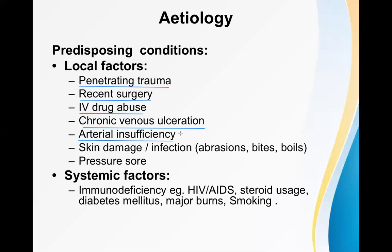Arterial insufficiency — where blood flow in an artery is not proper — is another local factor. Examples include thrombosis, embolism, atherosclerosis, Buerger's disease (thromboangitis obliterans), Raynaud's phenomenon, and even diabetes secondarily through atherosclerosis. When arterial insufficiency occurs the supplied area becomes ischemic, and that ischemic area may ulcerate, becoming a site for necrotizing fasciitis.